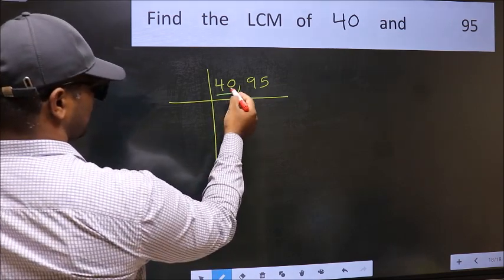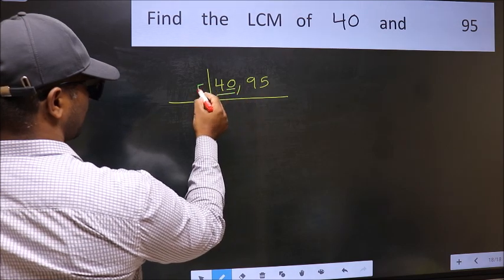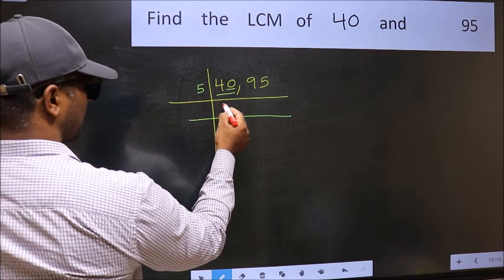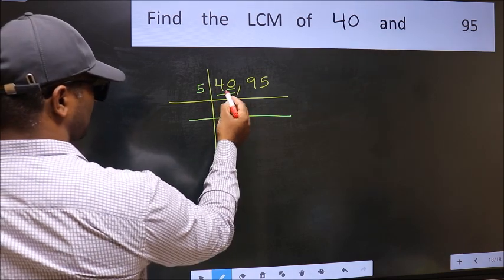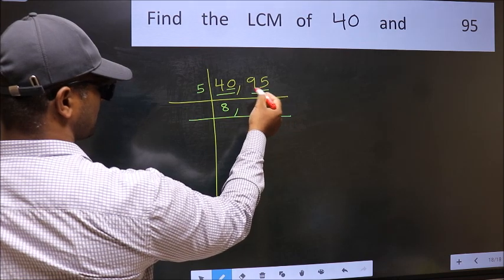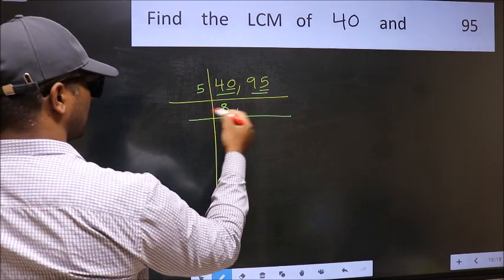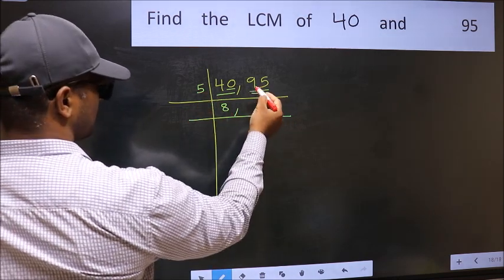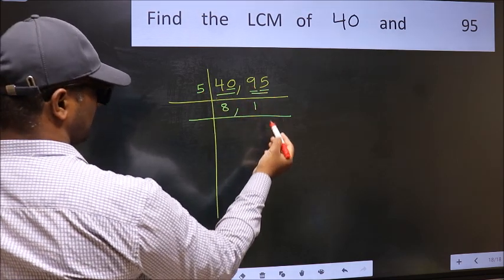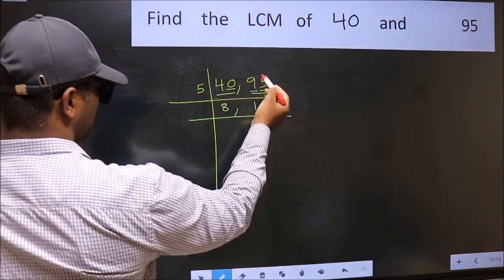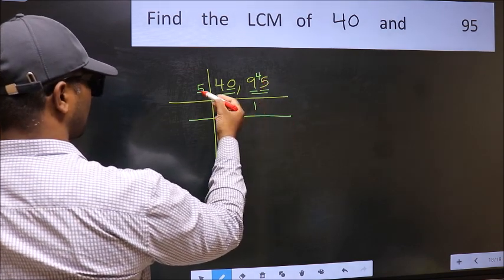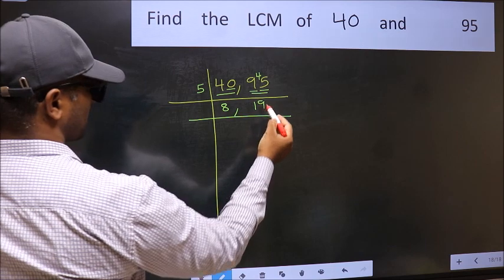In this number, the last digit is 0, so take 5. When do we get 40 in the 5 table? 5 times 8 is 40. The other number is 95. Last digit is 5, so this number is also divisible by 5. The first digit is 9 — a number close to 9 in the 5 table is 5 times 1 is 5. 9 minus 5 is 4, carry forward: 45. When do we get 45 in the 5 table? 5 times 9 is 45.